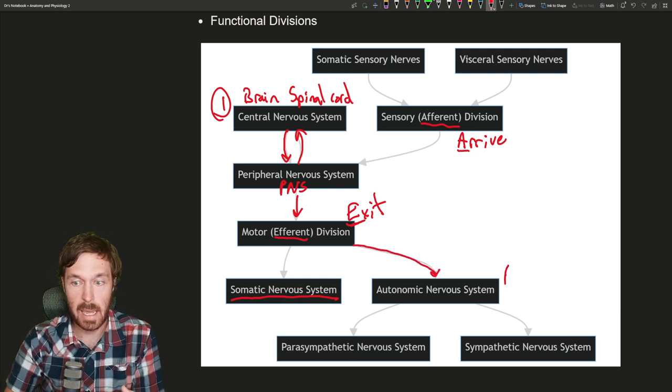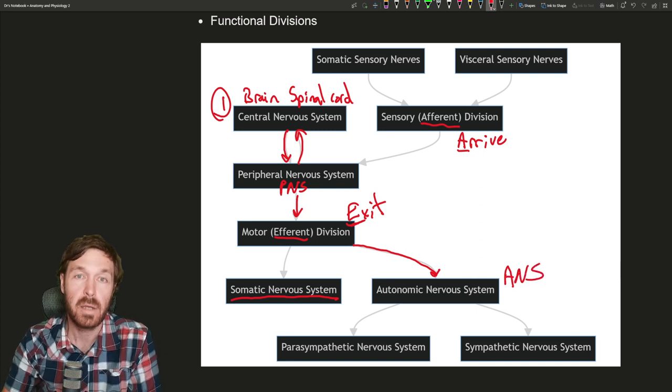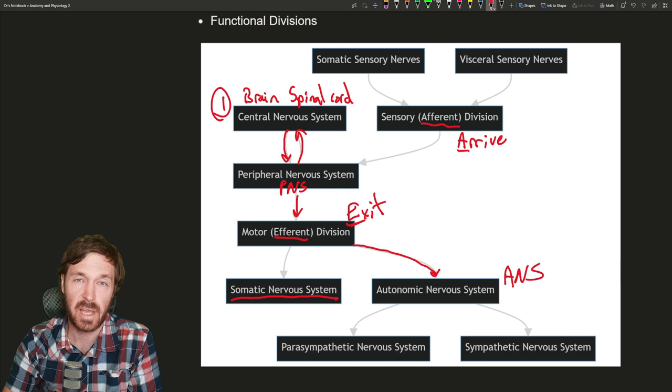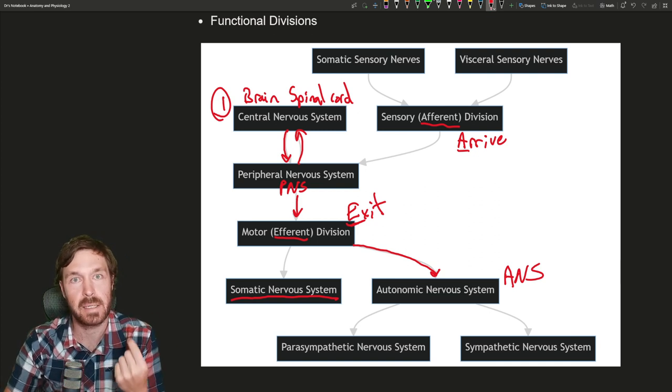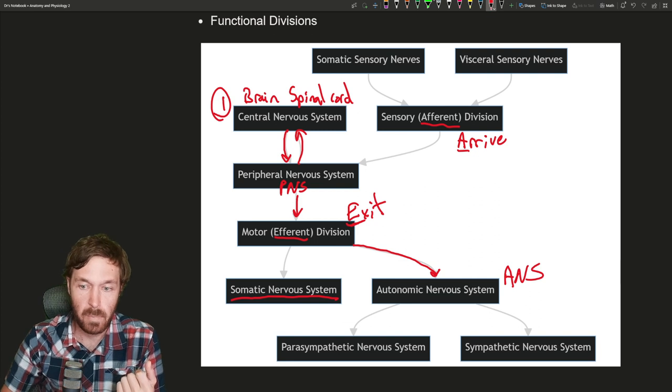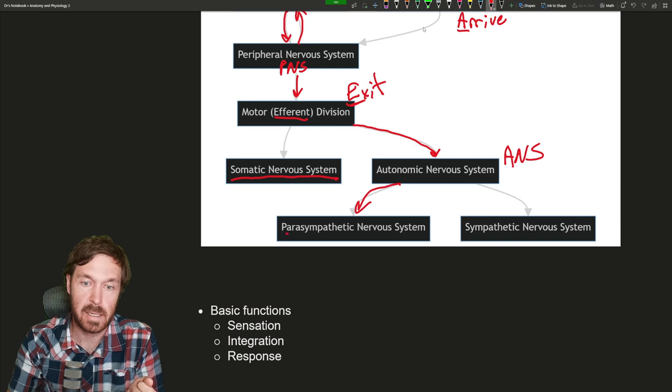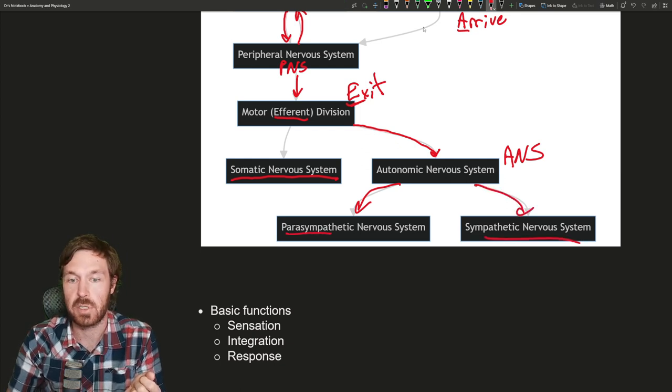That's your autonomic nervous system at work. This is the ANS. ANS is occurring automatically. If after you watch this video, you decide to go for a run, your heart rate increases, your respiratory rate increases, your vasomotor tone changes, you get more blood going to your skeletal muscles. You don't have to think about doing that. Your body automatically does it. So that's broken into two divisions.